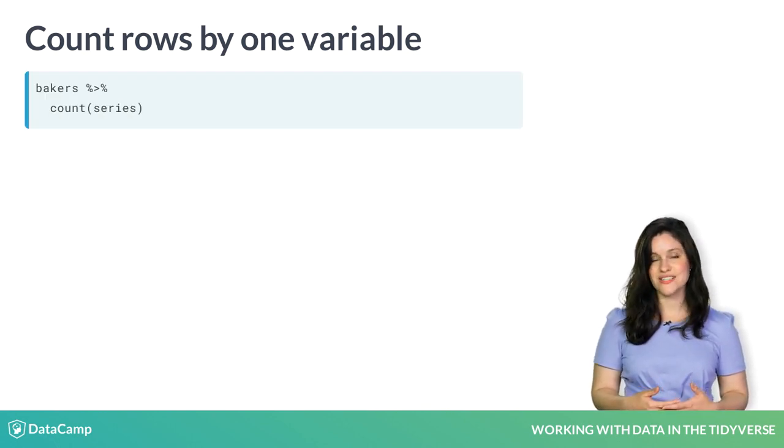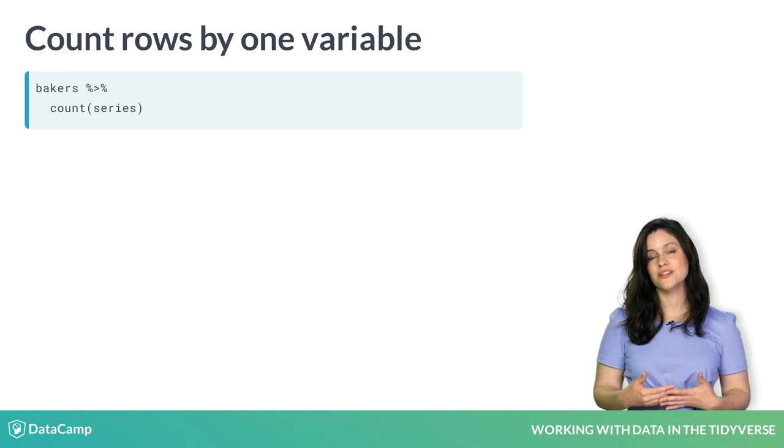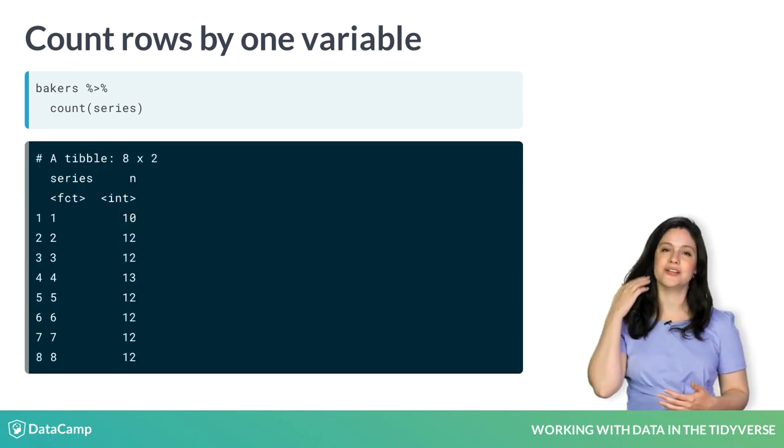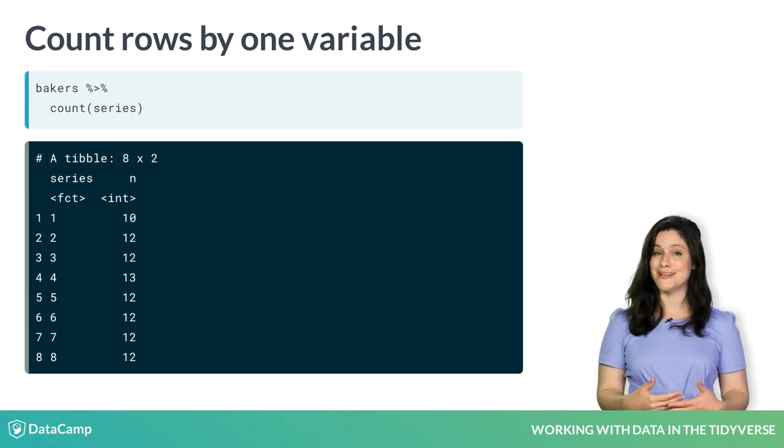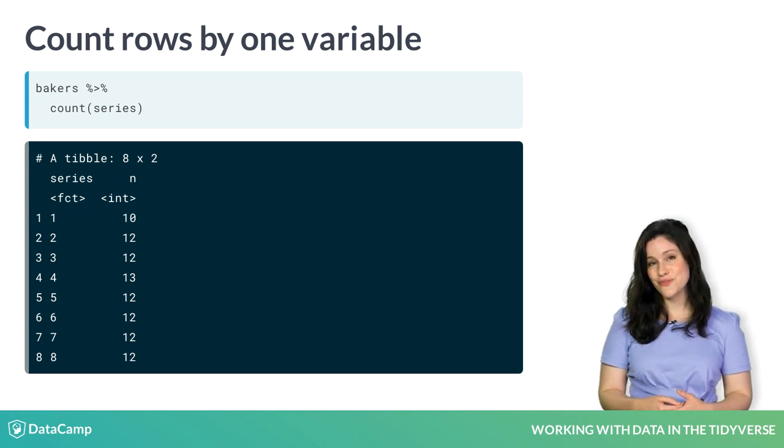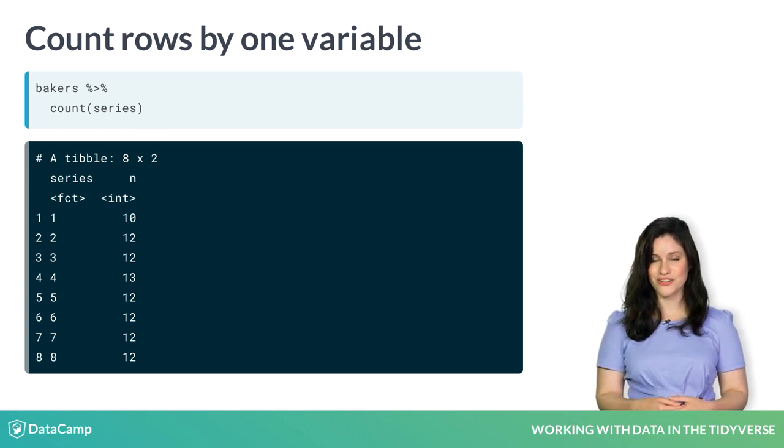The argument to count is a variable or variables to group by. Count adds a new column named 'n' to store the counts. Since each row is a baker, we know that most series feature a dozen bakers. Series 1 had only 10, and series 4 had a baker's dozen, or 13.